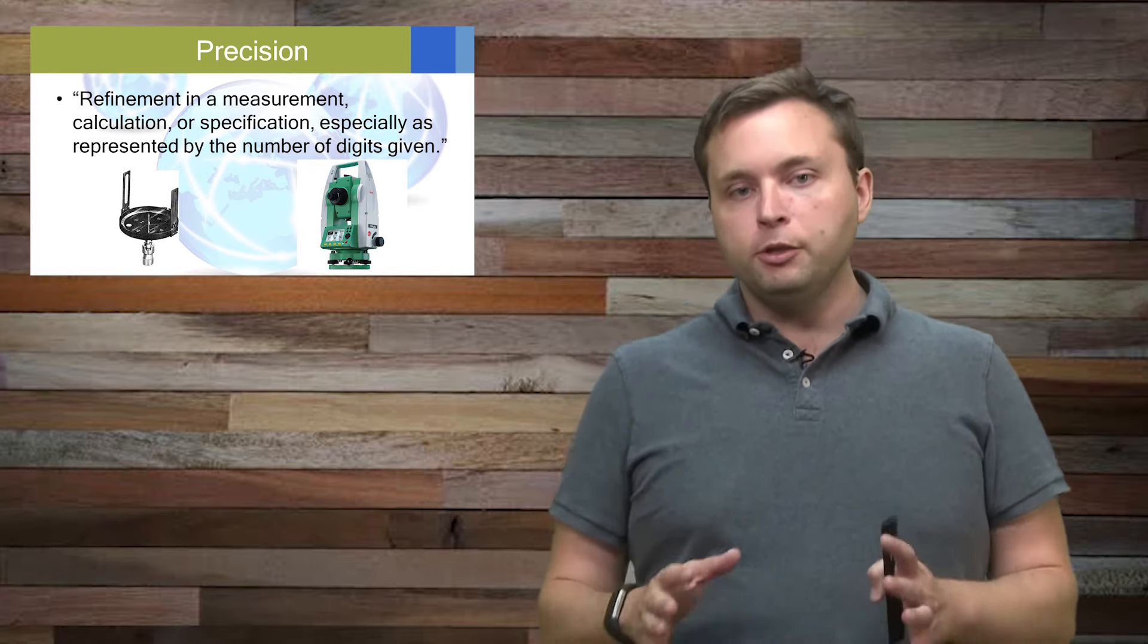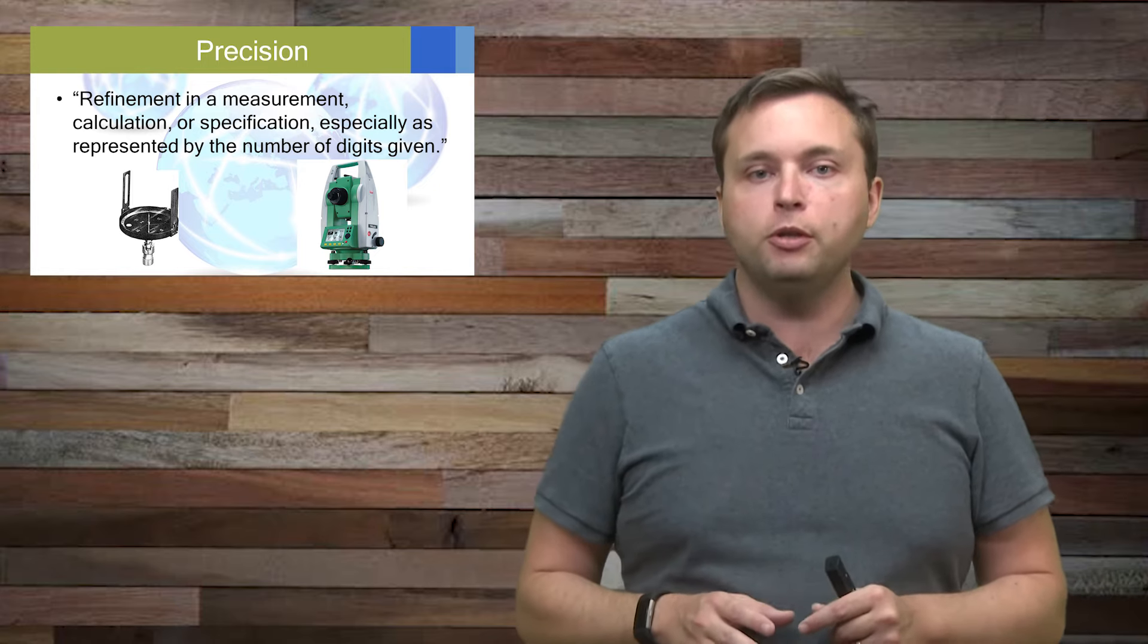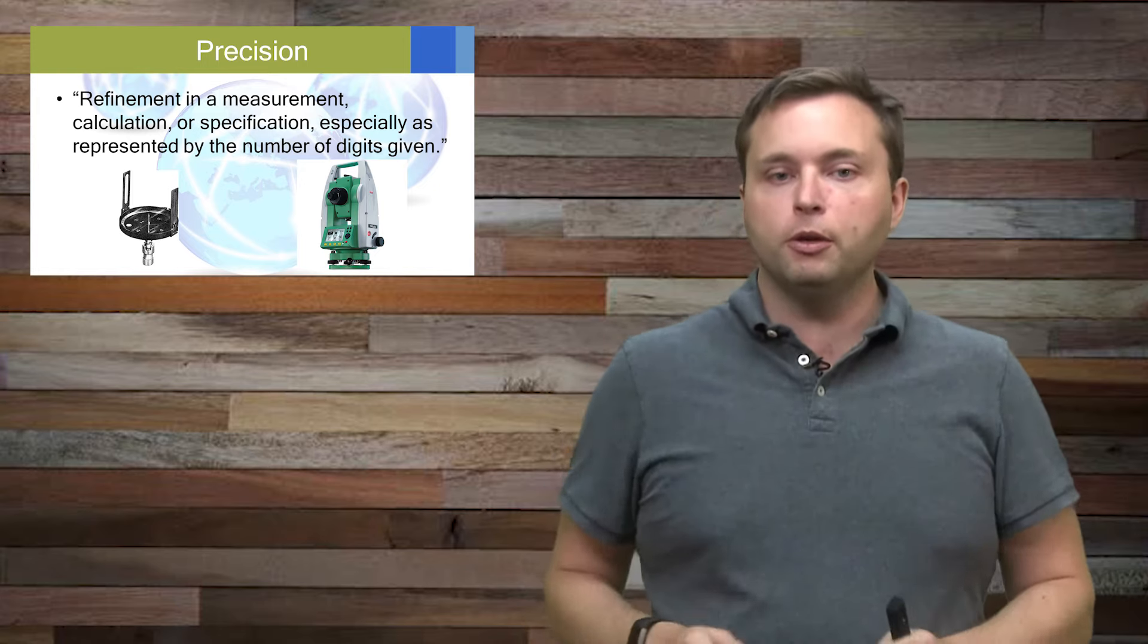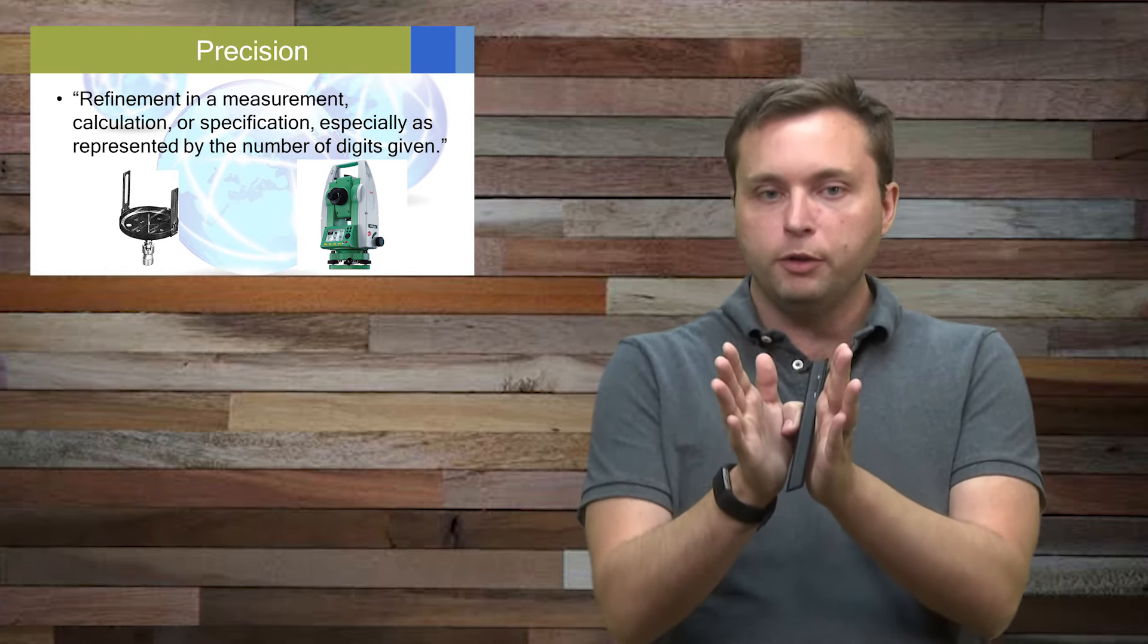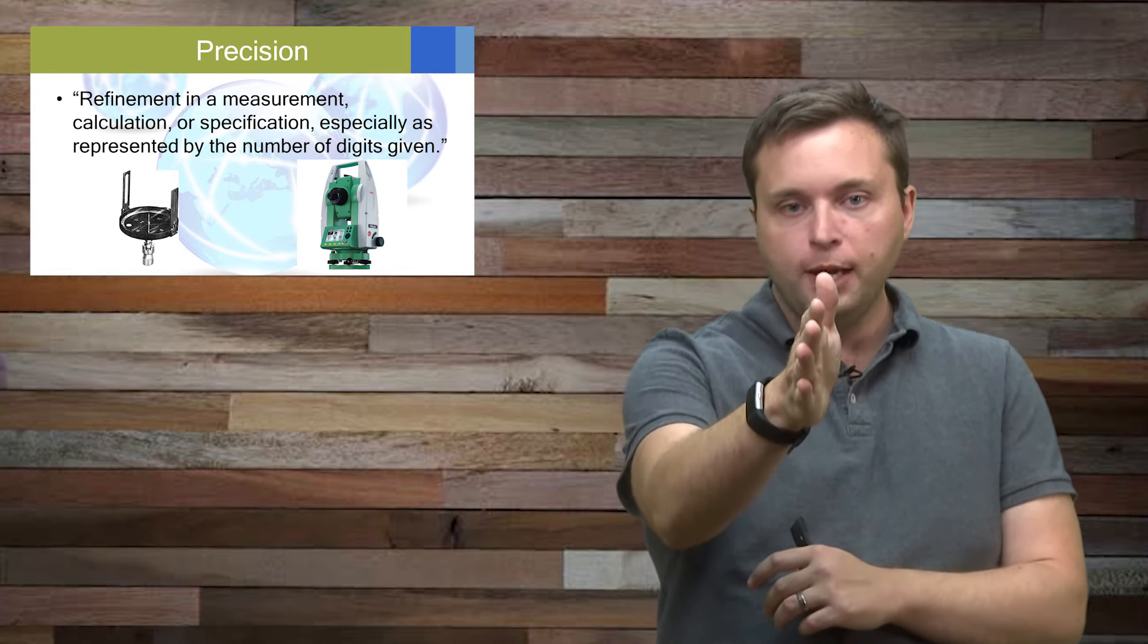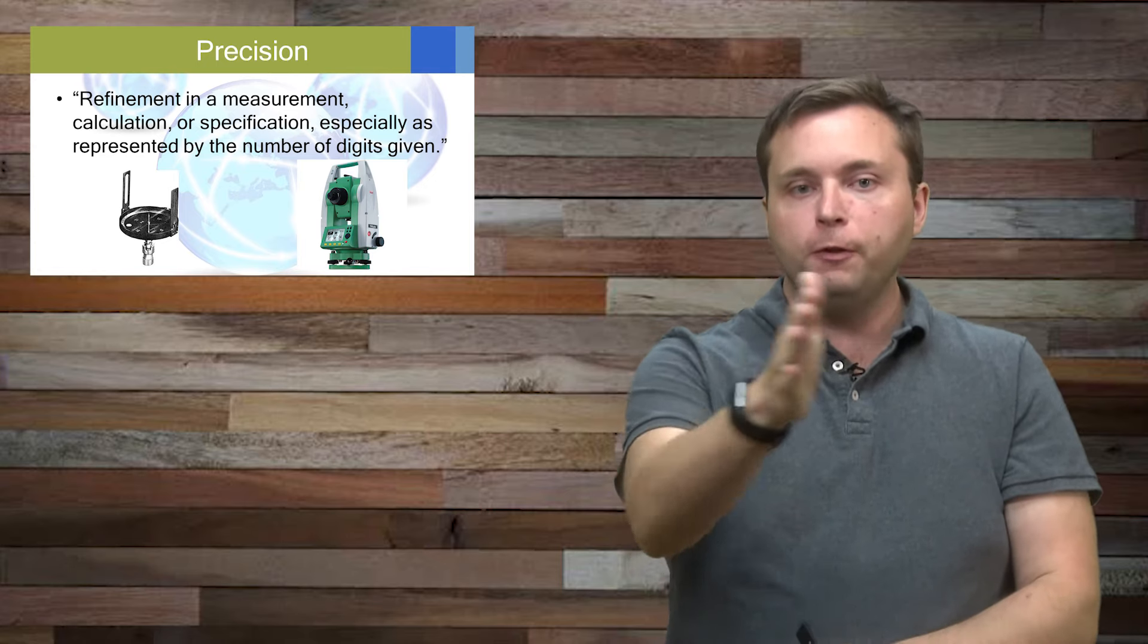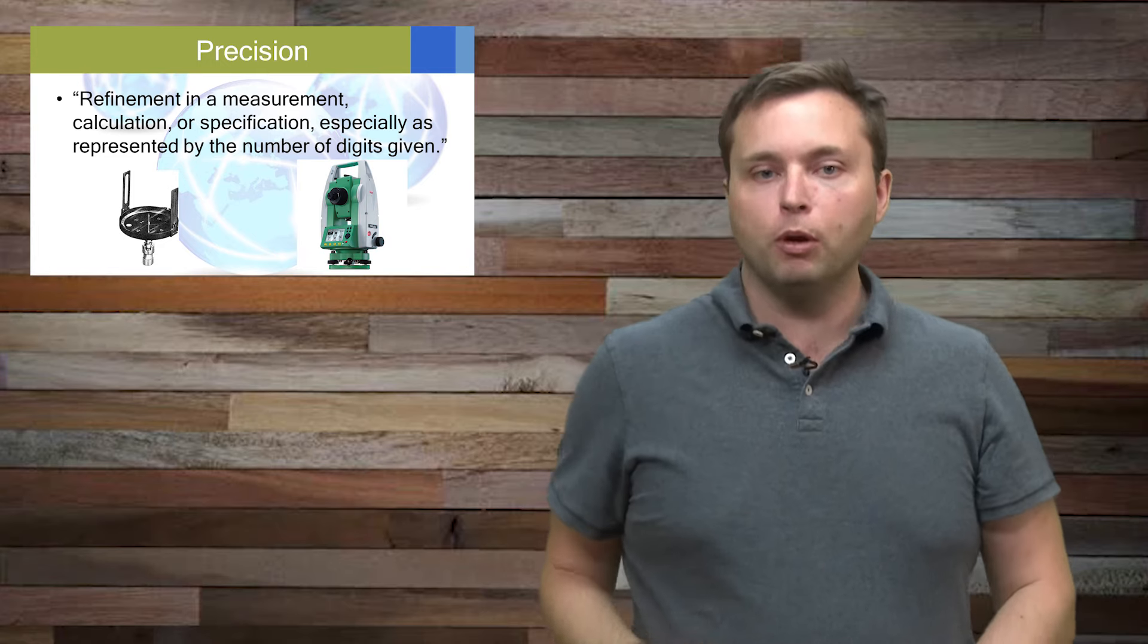So my surveyor's compass which I have used before, it's pretty cool, measures to the nearest 15 minutes, that is one quarter of a degree. If I shot a benchmark 10 times I could be up to 15 minutes different in every measurement that is a very poor precision.